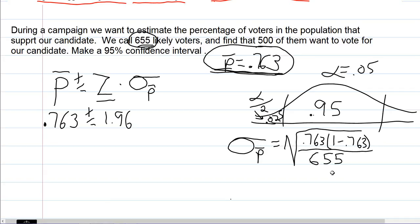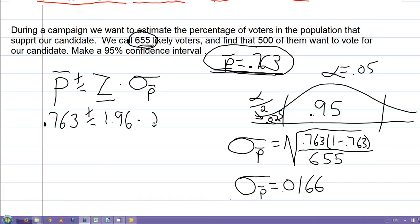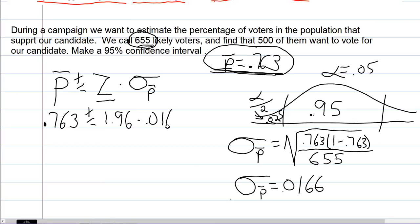Let's calculate the standard error. 0.763 times 1 minus 0.763, divided by 655, and then take the square root. So our standard error of our proportion is 0.0166.